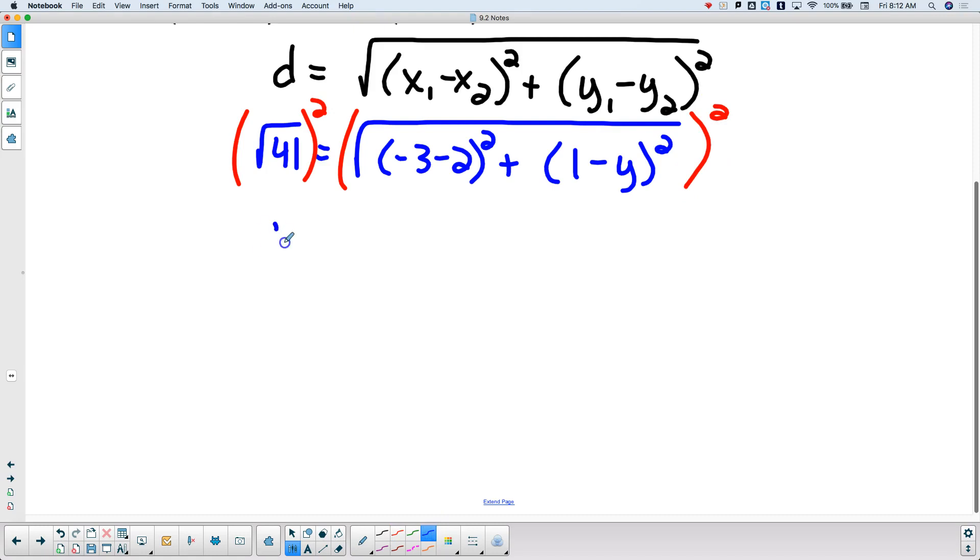So then that becomes 41 equals, did you combine negative 3 minus 2 right away? 25, because negative 3 minus 2 is negative 5. Squared is 25. Did you square the 1 minus y? Or did you just leave it as 1 minus y quantity squared? That's good. Because if you square it, just know that if you square this here, it is not 1 minus y squared. Because it's 1 minus y times 1 minus y, which is 1 minus 2y plus y squared. You can't just square the terms. You have to square the whole thing.